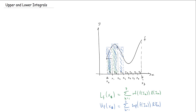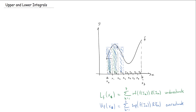What should be clear from this picture is that the lower sum is a bad estimate of the area under f — it's missing a whole bunch of stuff. The upper sum is also a bad estimate — it's got way too much. The lower sum is an underestimate and the upper sum is an overestimate. If I change the partition and use different X's, I again get underestimates from the lower sums and overestimates from the upper sums.